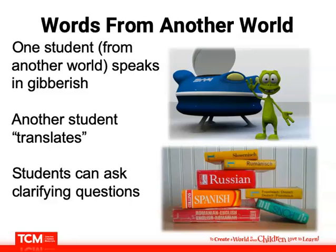Another fun activity is Words from Another World. One student — the one from another world — speaks in gibberish, and another student translates for them. The other students can ask clarifying questions along the way. The student speaking in gibberish uses tone of voice, gestures, body language, and facial expressions. The person translating uses those cues to state what the person is saying. It's a fun and silly activity that helps students share how people express themselves using nonverbal cues and to build social awareness.